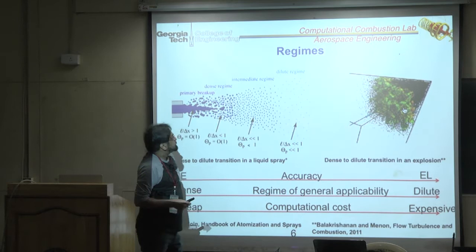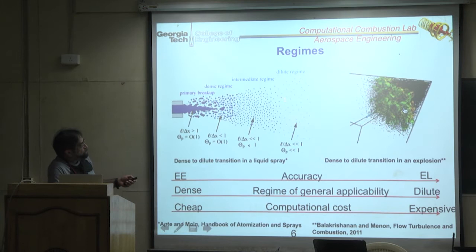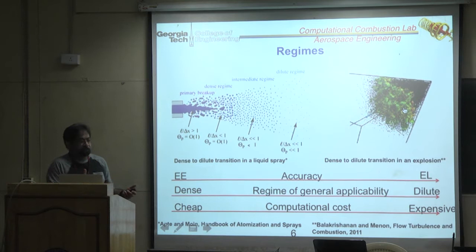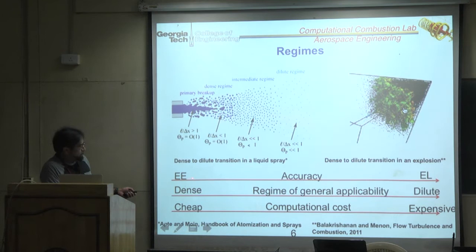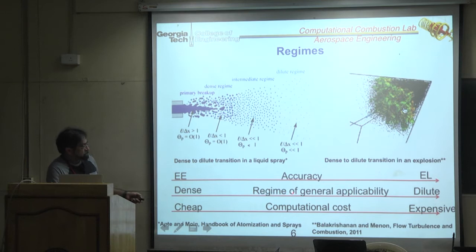The approach automatically adjusts to the dilute regime without needing to explicitly know where the dilute boundary is — it's determined by the volume fraction. Eulerian-Eulerian is basically the seven-equation model: Navier-Stokes equations for both gas and particles, with particle velocity, temperature, and pressure. It's computationally cheap for dense cases but Lagrangian becomes expensive for dense problems.